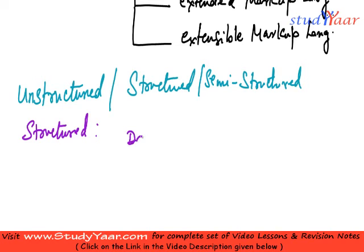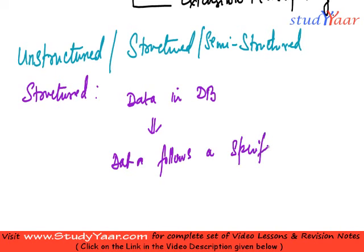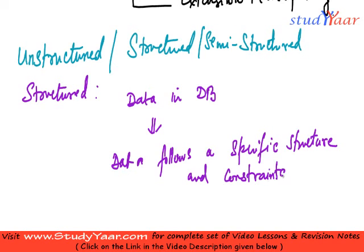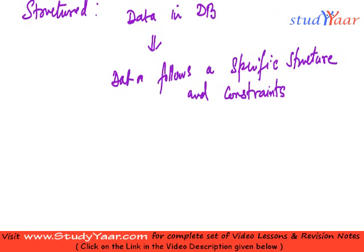Data or information in a database is an example of structured data because it follows a specific structure and constraints. When I talked about tuples and all, those were a type of structured data. A relational database is a type of structured data — the relation is structured into attributes and constraints.